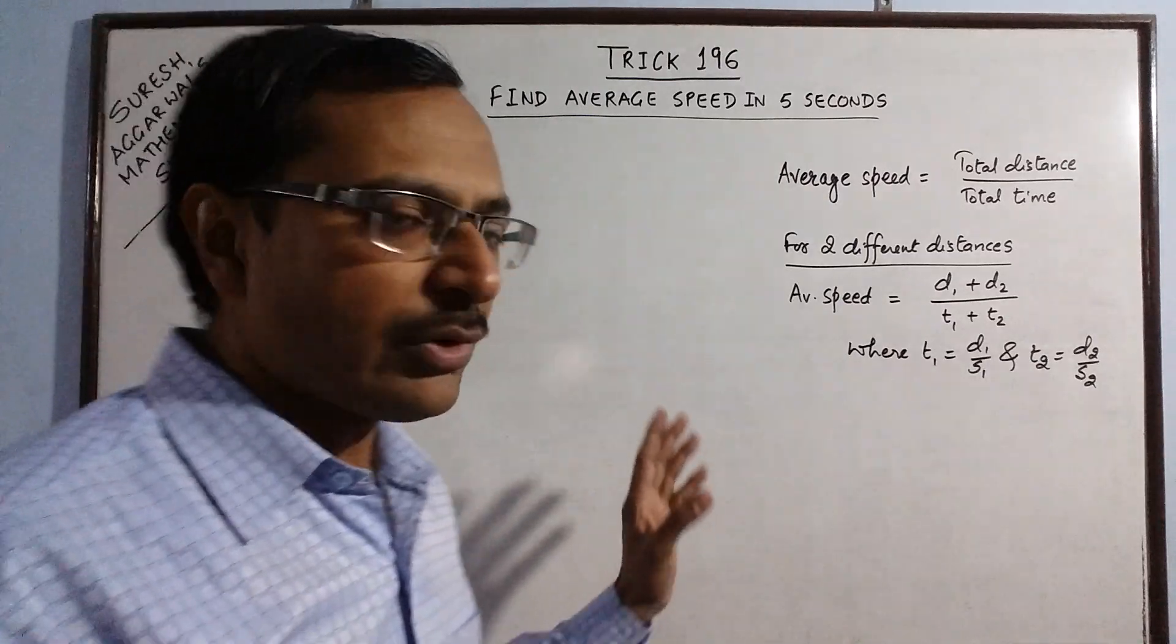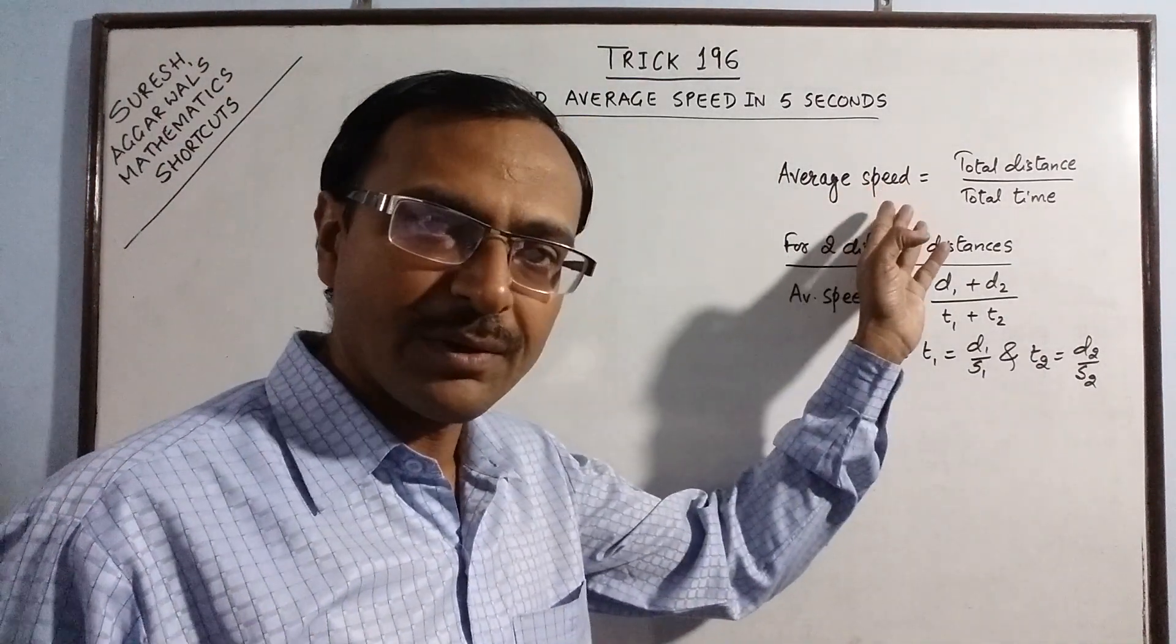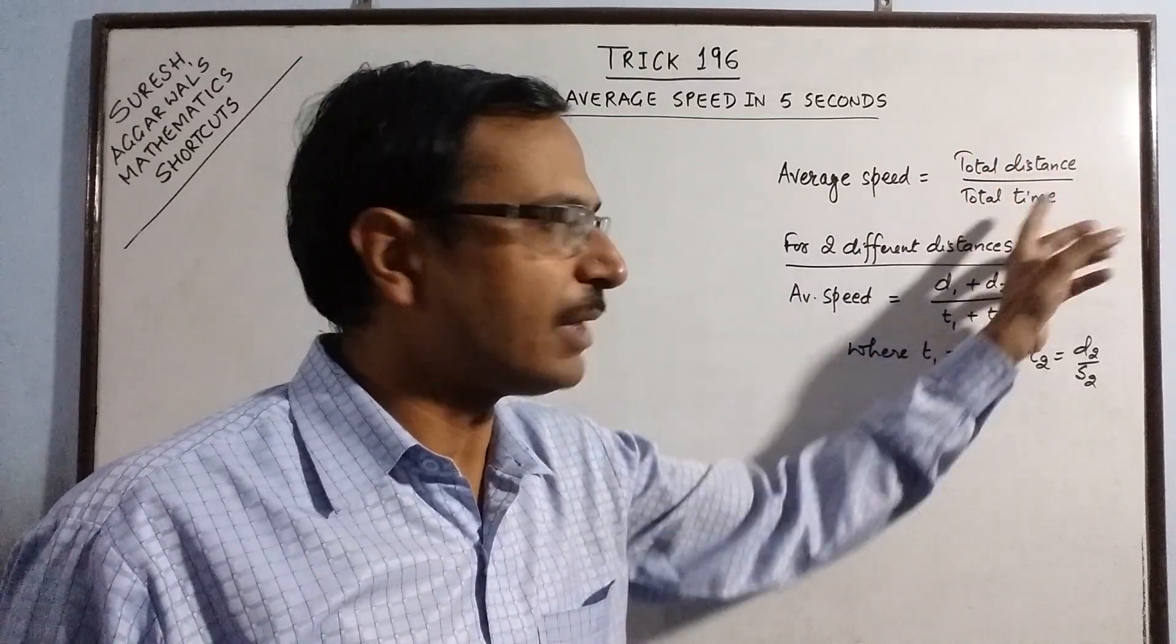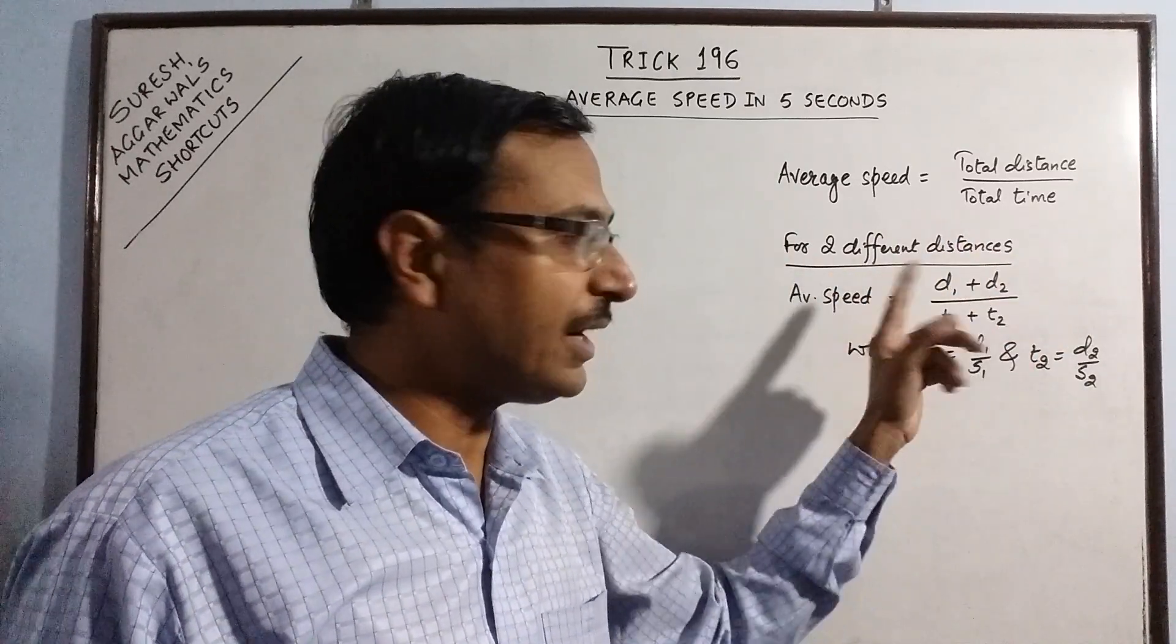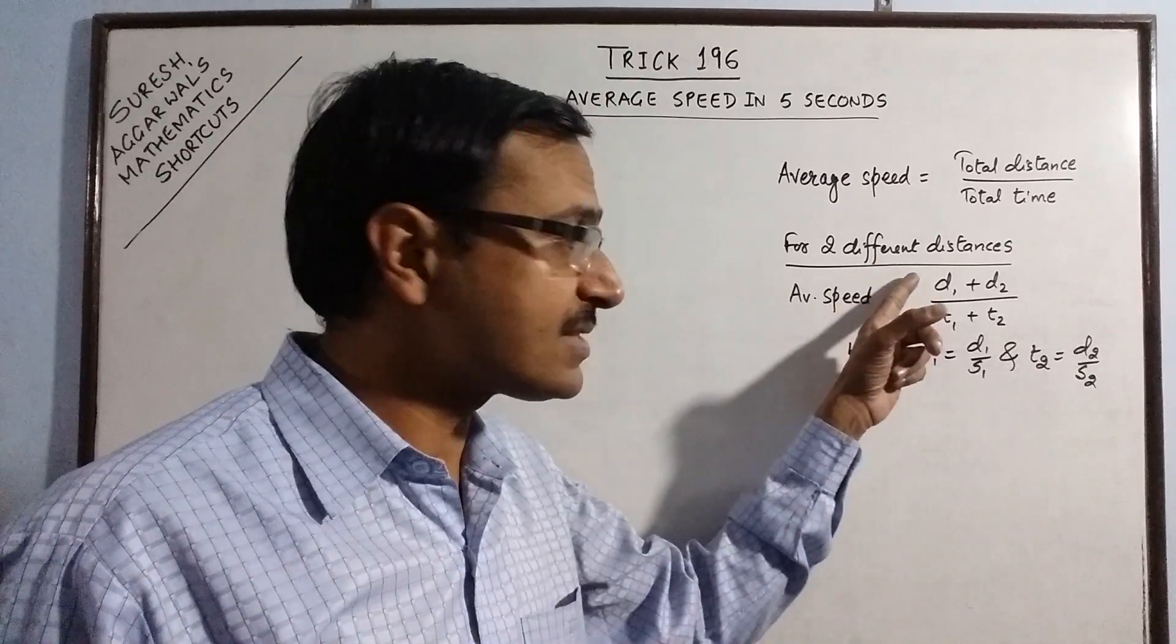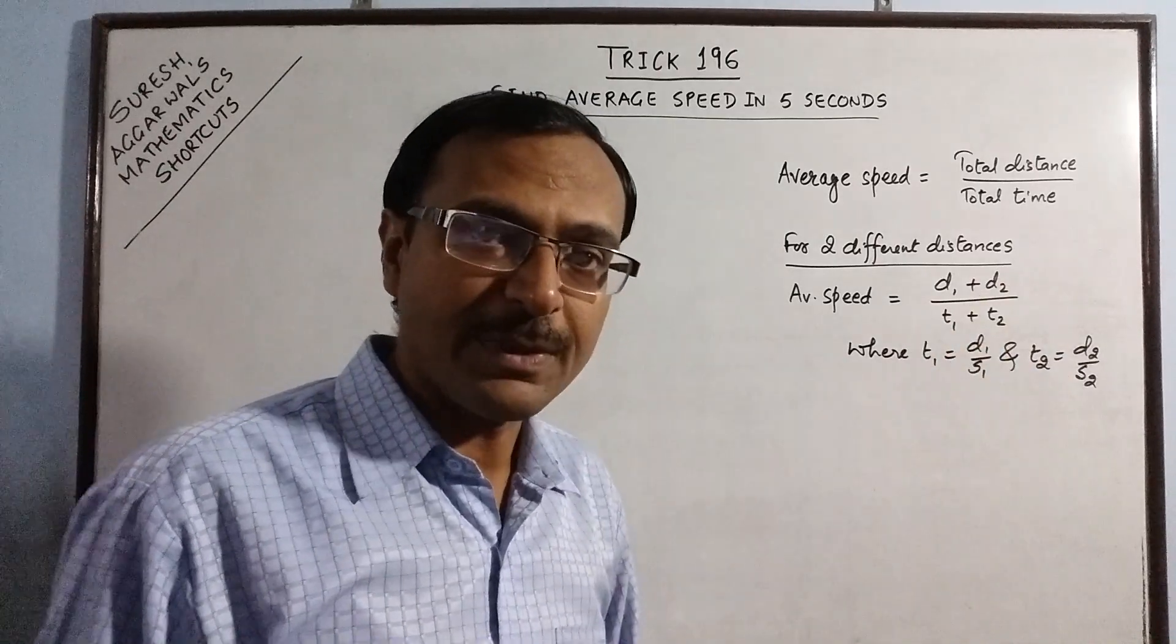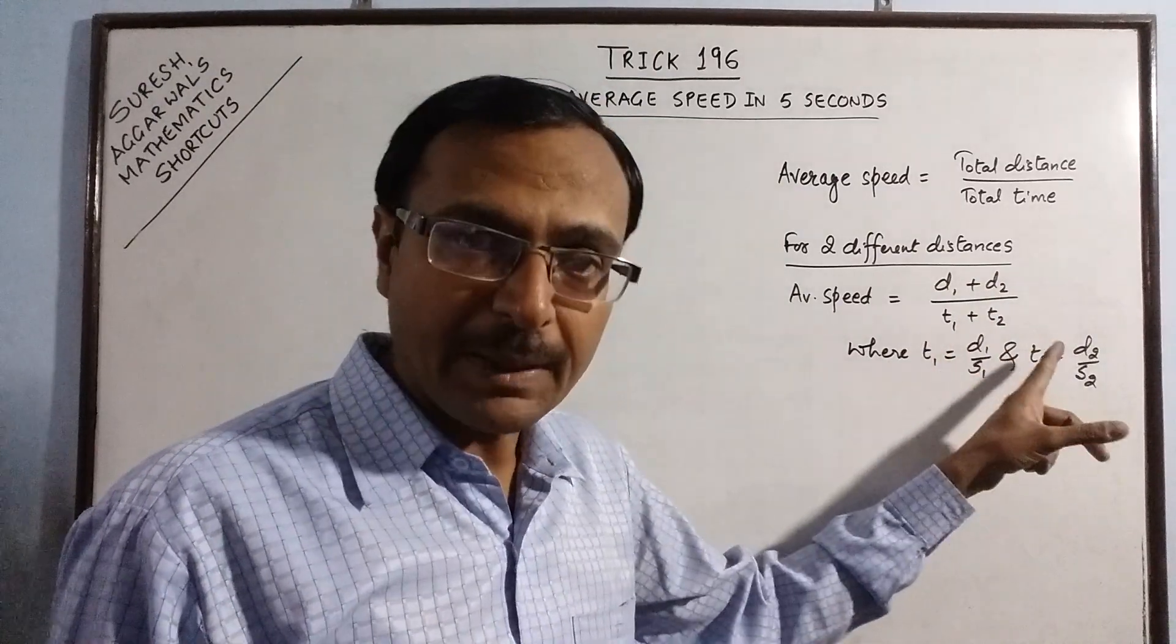Now, for finding the average speed, you have to use the formula of dividing the total distance by the total time. So, for two different distances d1 and d2, if you want to find the average speed when distance d1 is covered with a different speed and d2 is covered with a different speed, then you need to divide the total distance by the total time taken.